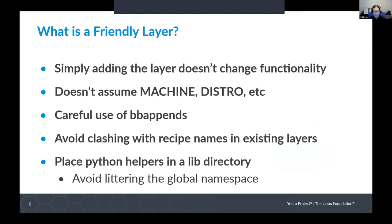So what do I mean by a friendly layer? The first thing is to say that simply adding a layer into your build shouldn't change the functionality, shouldn't change what you get out of the build. That's a really important principle and it's an easy one to neglect. But following this does make it much easier when you're combining lots of different layers together. A friendly layer also doesn't assume that you're building for a particular machine or a particular distro. It should be flexible and allow the person using your layer to use it in their builds appropriately.